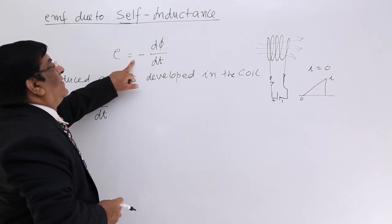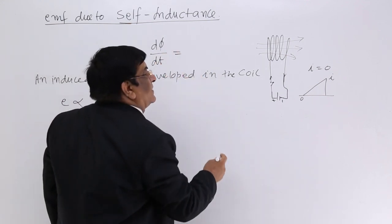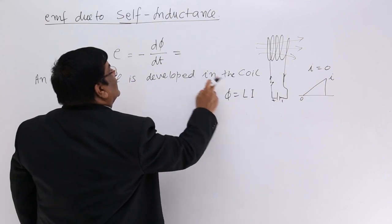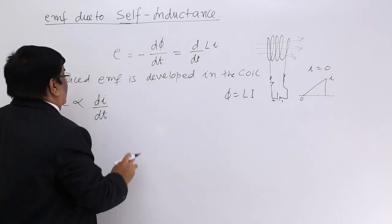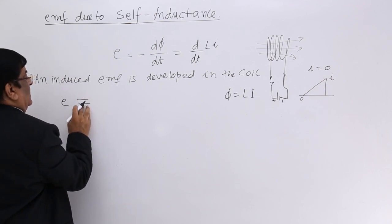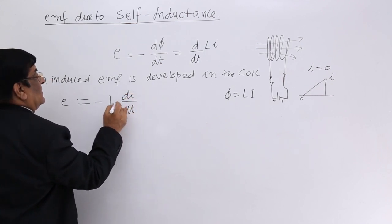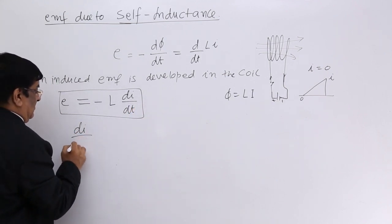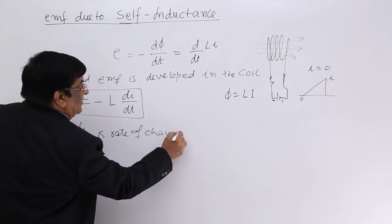That EMF, according to Faraday's second law, is minus d-phi by dt. Now phi is equal to L into I, where L is the coefficient of self-inductance. So the EMF becomes minus d by dt of L times I, and therefore we can write E equals minus L di by dt. Here di by dt is the rate of change of current.